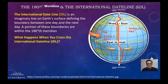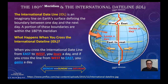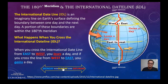When you cross the International Date Line from east to west, you lose a day. When you cross from west to east, you gain a day. For example, if you are traveling east to west and cross on Sunday, after crossing it becomes Saturday again. But if traveling west to east and crossing on Sunday, after crossing it is already Monday. That is the International Date Line.